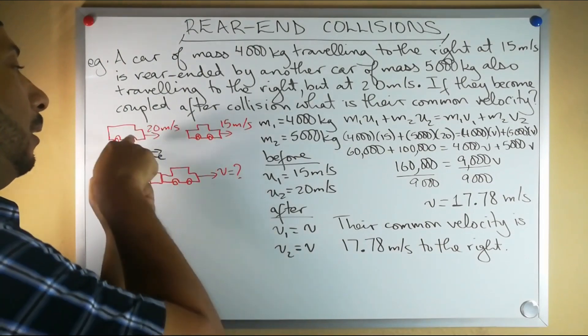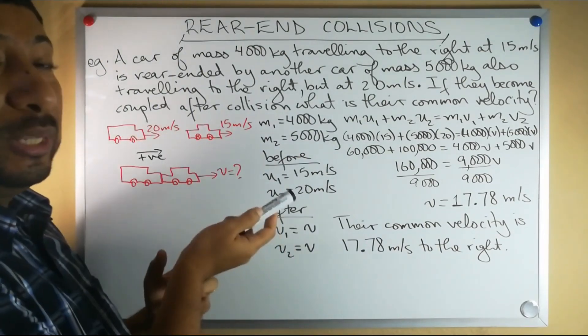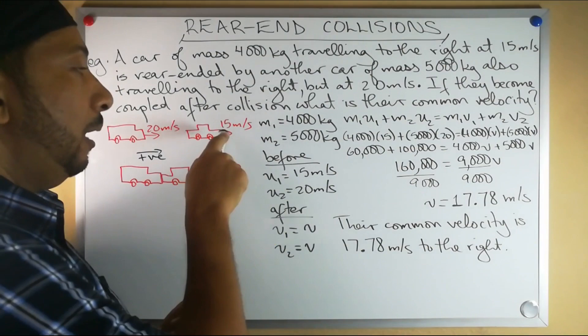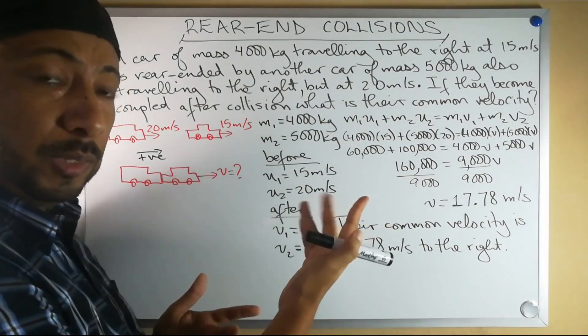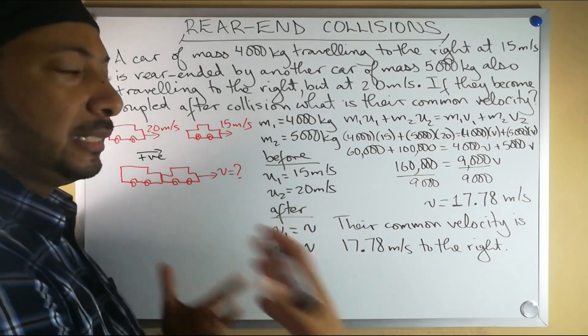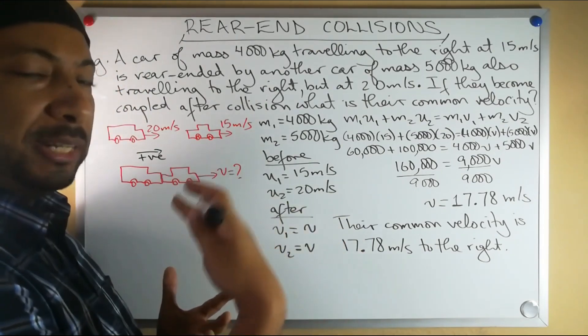If this one is gonna hit the back of that one, then won't the big truck that was traveling at 20 slow down, and won't the small car that was traveling at 15 gain some speed? If that is logically what makes sense, then we should expect to get an answer between 15 meters per second and 20 meters per second.